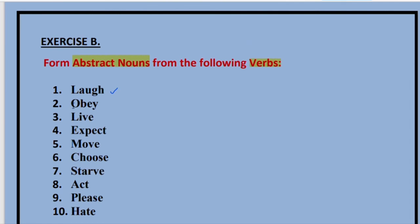The second one is 'obey.' Obey is a verb. What would be the abstract form of it? It would be 'obedience' — O-B-E-D-I-E-N-C-E. Third one is 'live.' We live a life, but what is the abstract form of 'live'? It is 'life' — L-I-F-E.